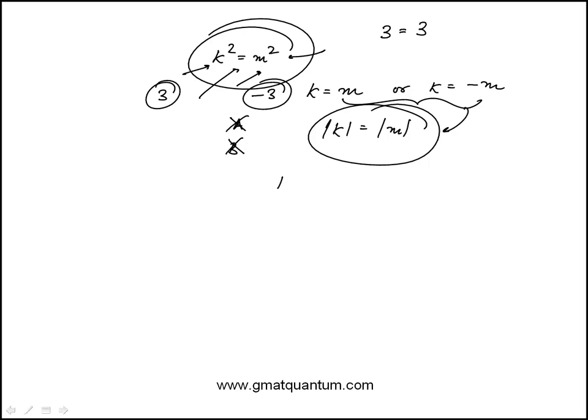Now, you could certainly eliminate the answer choices as we've done with A and B. We can eliminate this. If k was minus 3 and m was 3, in that case, this wouldn't be equal. So we know C is out.